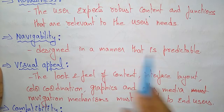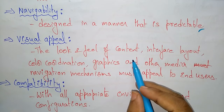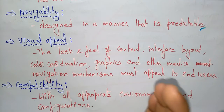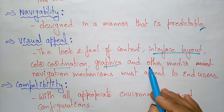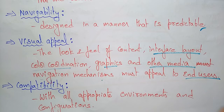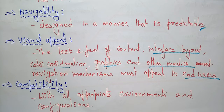Navigability means the design is in a manner that is predictable. The next goal is visual appeal — the look and feel of content, interface layout, color coordination, graphics, and other media. Navigation mechanisms must appeal to end users. Your web app should be designed so that color coordination is good, graphics are excellent, and other media and navigation mechanisms provided appeal to end users. If the visual appearance is excellent, then you can achieve your goal.